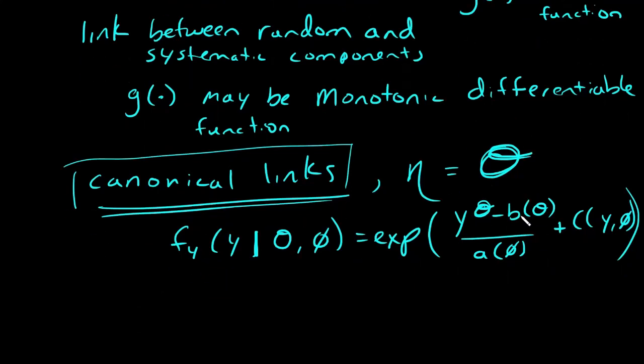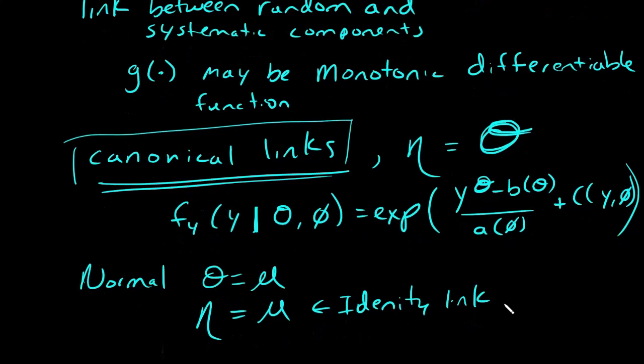If you recall, for example, the normal distribution, we had theta equal to mu, equal to the mean. So the canonical link would just be nu equals mu. This is called the identity link.